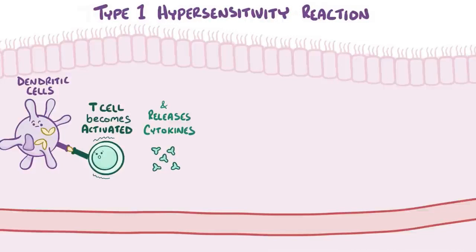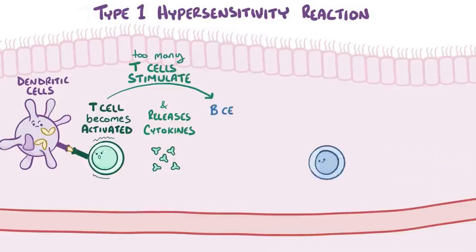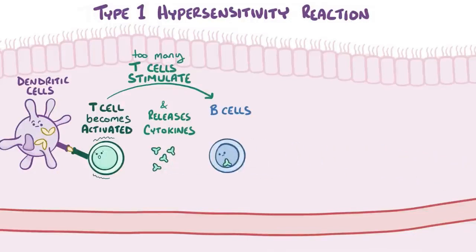The exact type of T cell determines the type of immune response, and in allergic rhinitis there's a bit of a T cell imbalance. There are too many T cells that, when activated, stimulate B cells, another group of lymphocytes, to produce IgE antibodies.